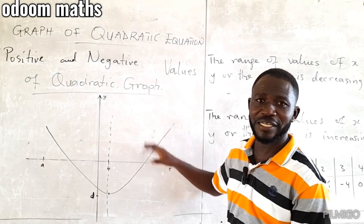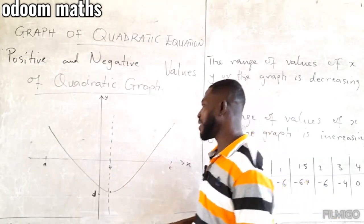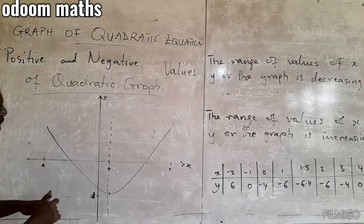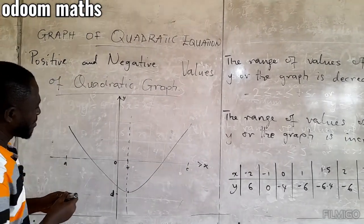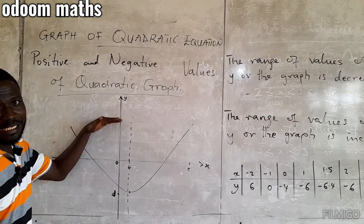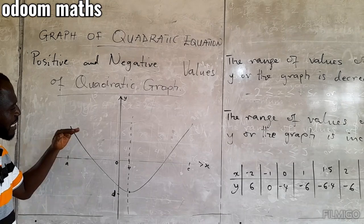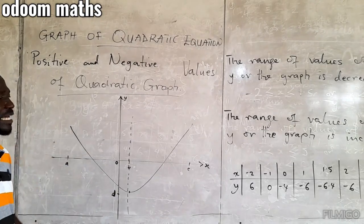Let's use this graph as an example. This is a U-shaped graph. Now, when we talk about the positive aspect of this graph, the values above the x-axis make the y to be positive. Then, for the negative, the values below the x-axis.